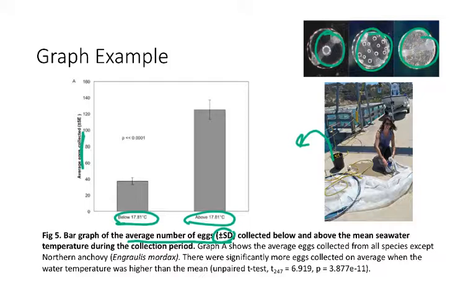Another thing that would indicate we should use a graph in this instance is that we're interested in showing the relationship or the trend between these two different categories of above and below. Here it's very easy to see visually that when the water temperature is below 17.9, we see a much lower average number of eggs compared to when we have the water temperature above that mean. In fact, if we look here in the figure caption, they've done a t-test to determine that these averages are significantly different from each other. That's an example of when you would want to use a graph if you want to show analyzed processed data and how it relates among two different or more variables.